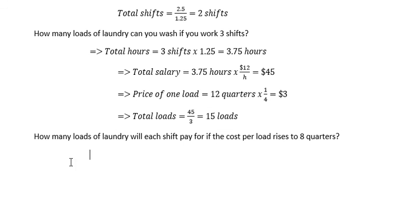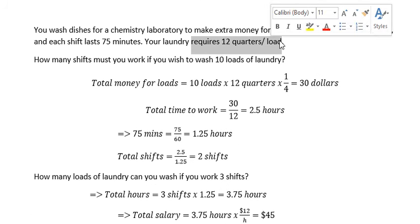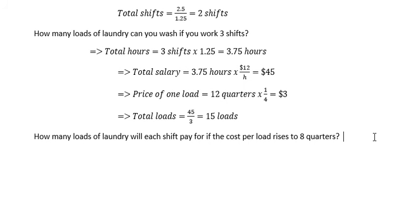The next question, how many loads of laundry will each shift pay for if the cost per load rises to 8 quarters? So now we have 12 quarters per load in here. Now they go up to 8 loads. So it means we have 12 plus 8, you got about 20 quarters per load.